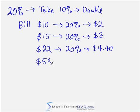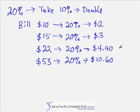And finally, what if I had a bill of $53 and I wanted to do a 20% tip? Well, again, I take the 10% tip, so I move the decimal point this way. That's $5.30, and I double it. If I double $5.30, it's going to be $10.60. Doubling $5 gives us $10. Doubling $0.30 gives us $0.60. So $10.60 for that 20% tip.